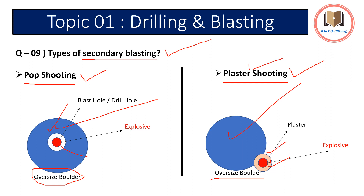Here are 2 types of secondary blasting: one is pop shooting and one is plaster shooting. Pop shot involves drilling a bolt hole, and plaster shooting involves explosive plastering placement.